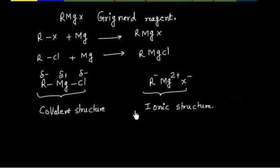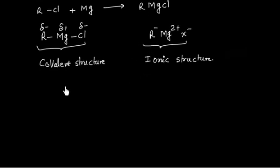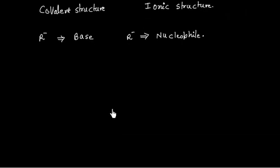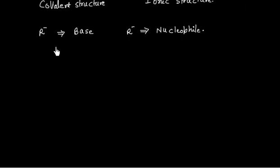Now if I see the ionic structure, Grignard reagent has R⁻. It can act as a base or it can also act as a nucleophile. When it acts as a nucleophile, it will attack on a carbon that has a positive charge. When it acts as a base, it will take H⁺ to form an alkane.